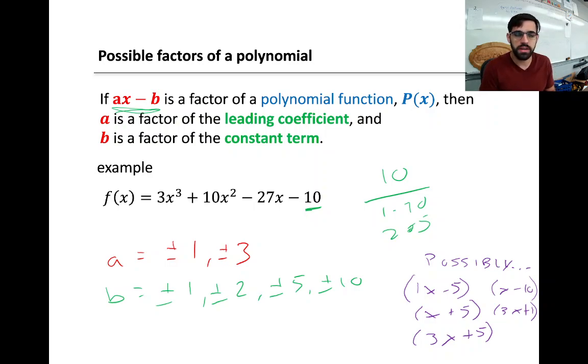If ax minus b is a factor of a polynomial function P(x), then a is a factor of the leading coefficient, and b is a factor of the constant term.